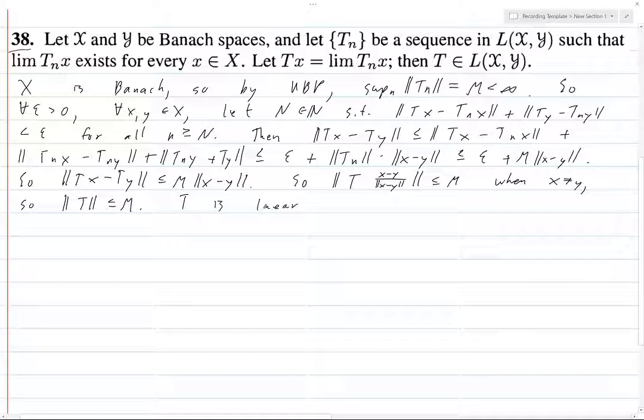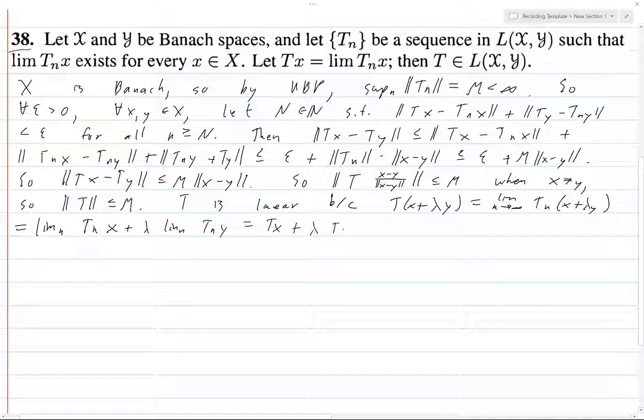So let's see here. T is linear because tx plus lambda y is the limit as n goes to infinity of tn of x plus lambda y. And basically, the thing here is that limits work nicely. Limits are linear. Limits and linearity work nicely together. Equals tx plus lambda ty.